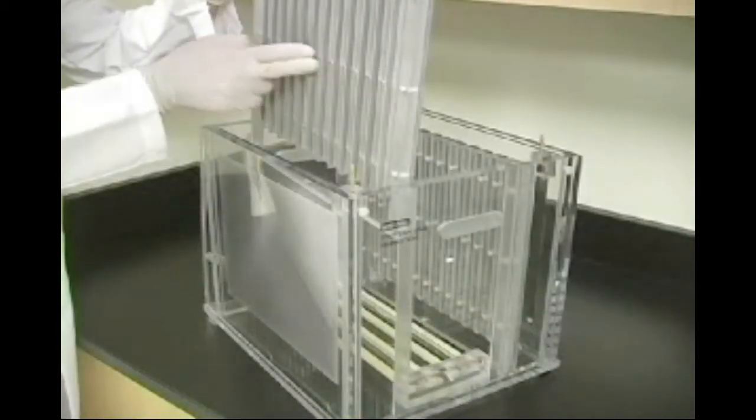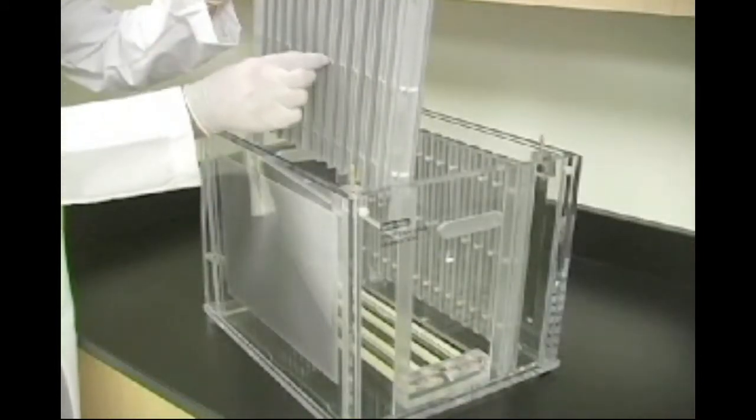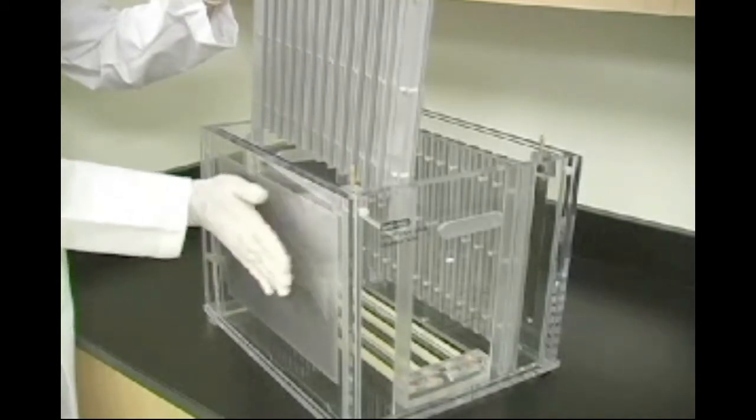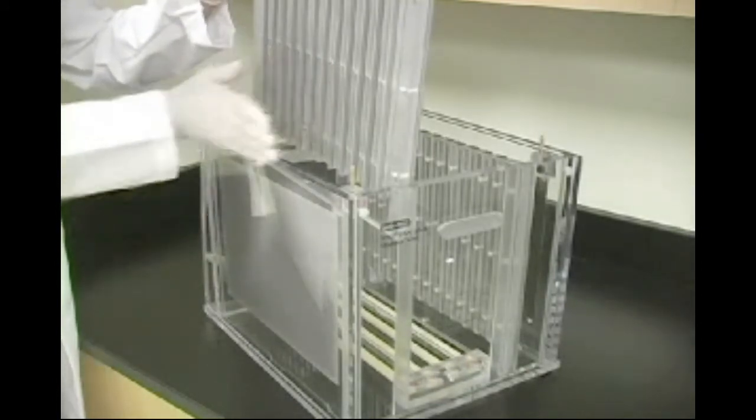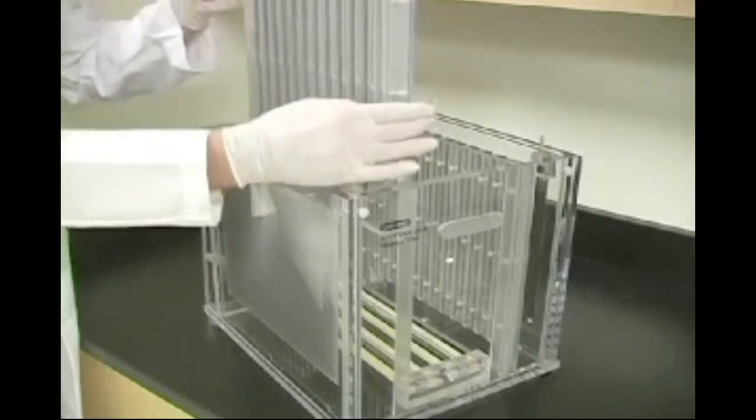To replace the gasket assemblies in the proper orientation, make sure the side with the rubber gaskets are placed so that the gaskets are facing outward toward the plate electrodes.